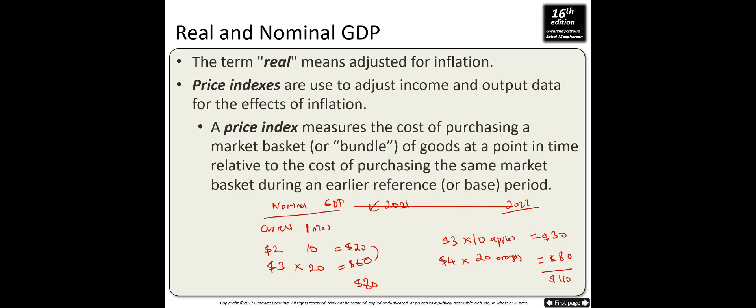In order to make correct comparisons between years, we have to keep prices constant to see growth in production. Living standards are determined by increases in production, not increases in prices. Real GDP means adjusted for inflation. To calculate real GDP, we need price indices. A price index measures the cost of purchasing a basket — say in 2021 — relative to the cost of purchasing the same basket during an earlier reference period, such as 2010.